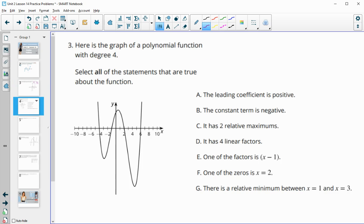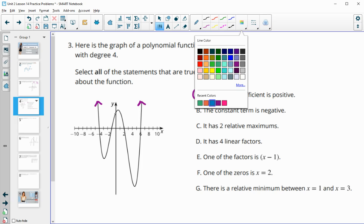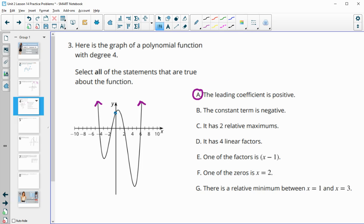Number three shows the graph of a polynomial function with degree 4. Select all statements that are true. The leading coefficient is positive—that's true because both ends are going up. The constant term is negative—well, the constant term is where it crosses the y-axis, and we can see that's above 0, so the constant term is positive, not negative.